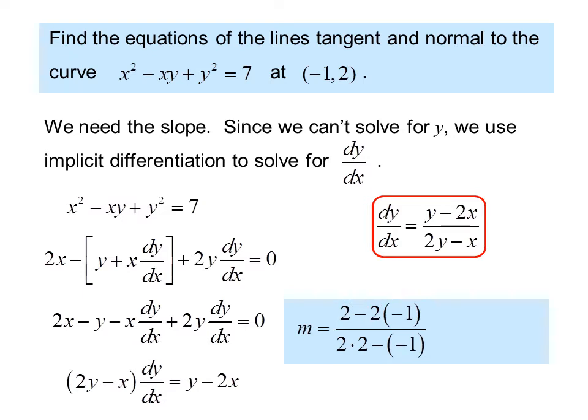So the slope is m equals 2 minus 2 times negative 1 over 2 times 2 minus a negative 1, which we got by putting in the values for x and y. Simplifying, we get the slope is 4 fifths.